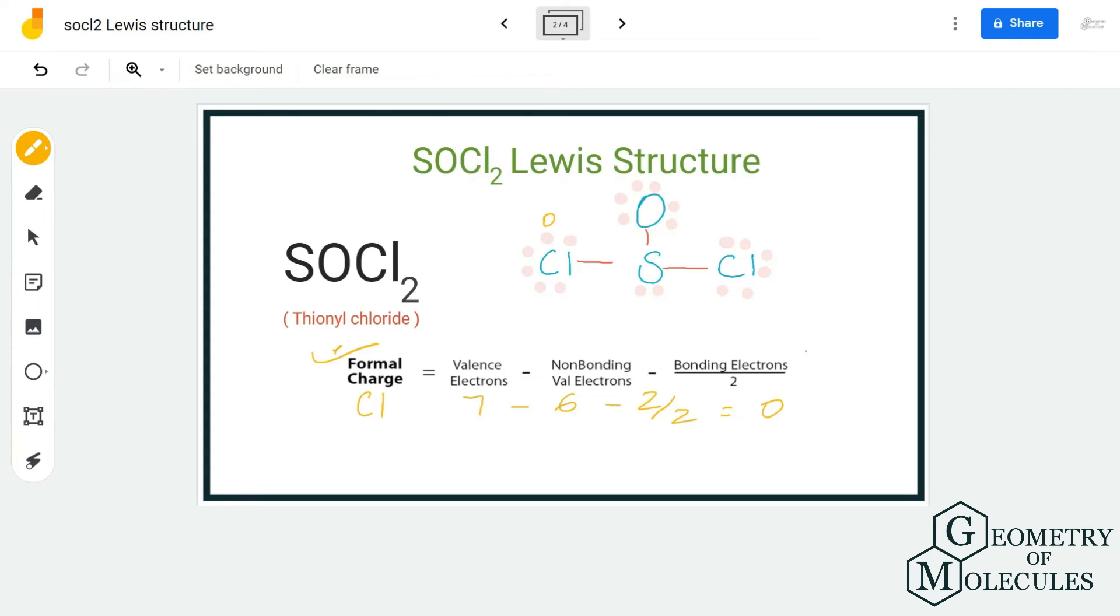When we move to sulfur atom, it has 6 valence electrons out of which 2 are non-bonding and 6 are bonding, giving a formal charge of +1. Similarly for oxygen atom, we have 6 valence electrons out of which 6 are non-bonding and 2 are bonding, which gives it a formal charge of -1.